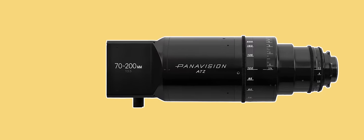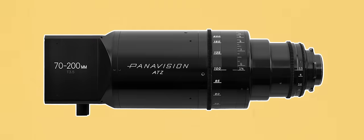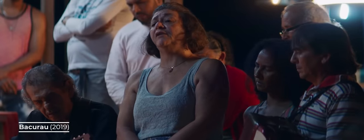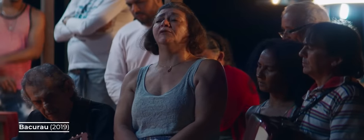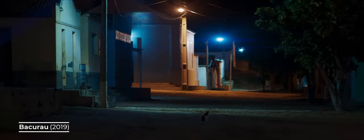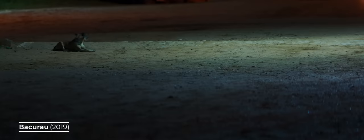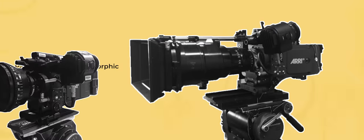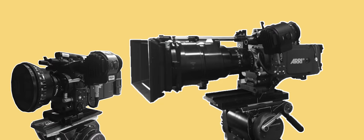Another potential limitation of anamorphics, especially front anamorphic zooms, is that because of their more difficult design and increased number of glass elements, they usually have a slower stop than their spherical peers — which renders a tad less bokeh and makes it more difficult to shoot in very low light conditions. They are also on average physically larger and heavier than spherical lenses, with the gigantic Primos being a great example of just how hefty a prime anamorphic lens can get, although many lighter alternatives do also exist.